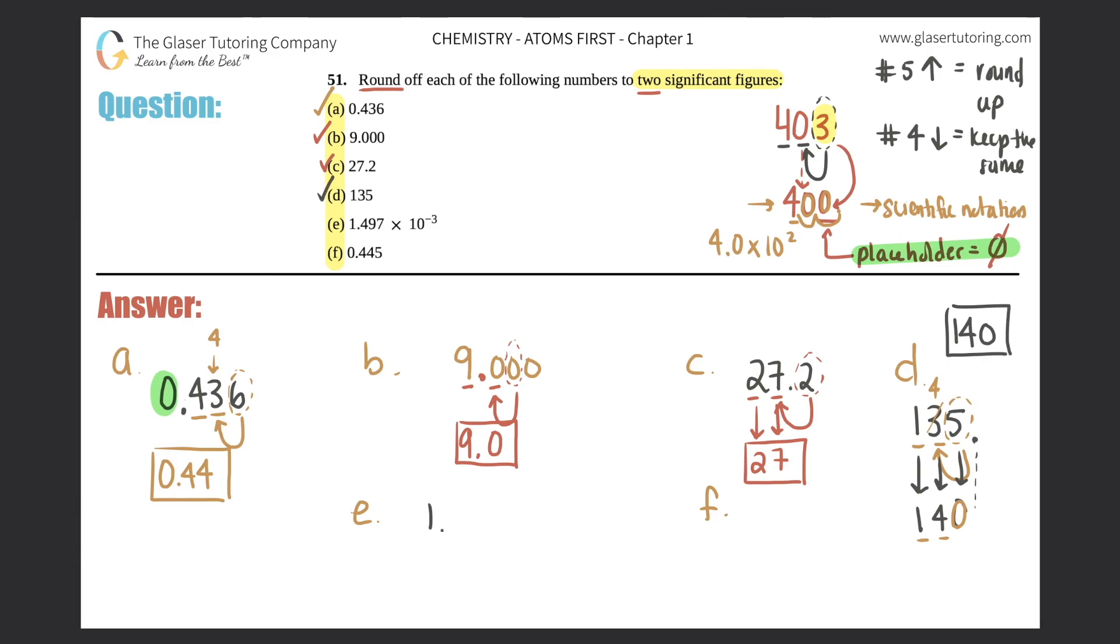Letter E, 1.497 times 10 to the negative three. Well, just like we know from before, the times 10 to the negative three has nothing to do with sig figs. So we're just going to drag that down. That doesn't change anything. But let's see now. I have a one and a four. So those are my two sig figs.